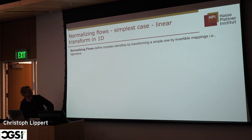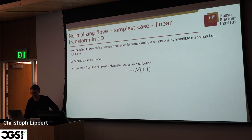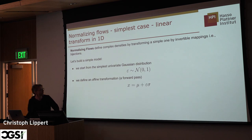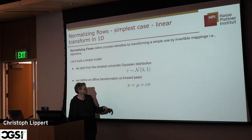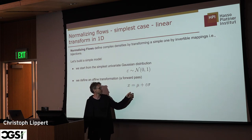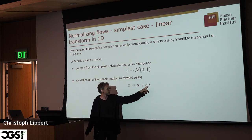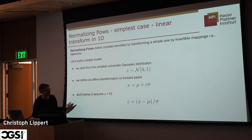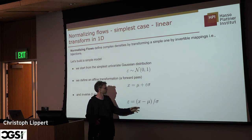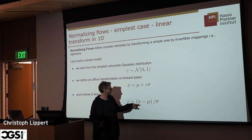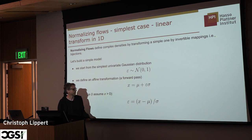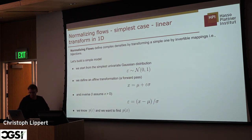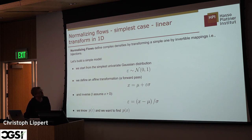Normalizing flows do exactly that. In the simple 1D case, say we have standard normally distributed data and we define an affine transformation — a forward pass in our normalizing flow — where the invertible function adds some μ and multiplies by σ. The corresponding inverse, given some x, gives us ε back: we subtract μ and then divide by σ. Starting with p(ε) as the standard normal, we want to find p(x).